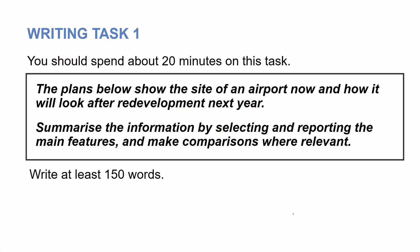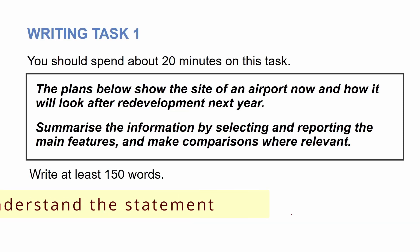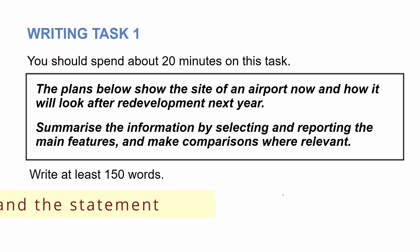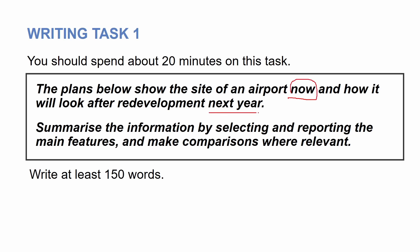This diagram is from IELTS Academic 16. As usual, we need to spend some time on the statement to understand it. The plans below show the site of an airport now and how it will look after redevelopment next year. It's clearly a diagram — one of them is about the present, so we use the language of the present, and the second one is about the future, so we use the language of the future. Always read the statement carefully to know what tenses should be used.